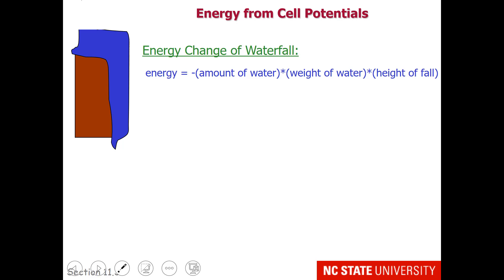That is why there is a negative in front of this equation for thinking about energy release. Now let's think about the energy change of falling electrons. The amount of water falling could be proportional to the number of electrons. The density of the water would be proportional to the weight of the electrons. And the height of the fall is equal to the voltage difference.